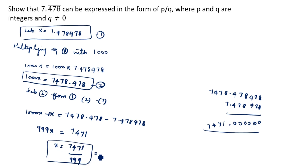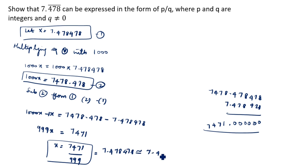So we confirm that 7.478 bar equals 7471 divided by 999, which verifies the repeating decimal 7.478478... Thanks for watching this video.